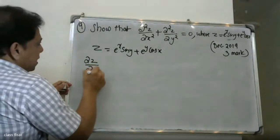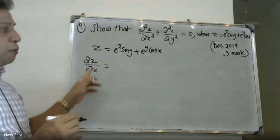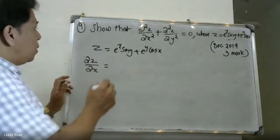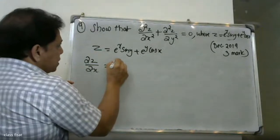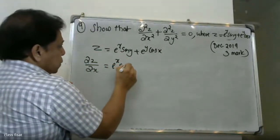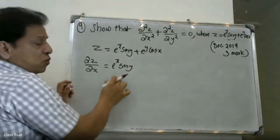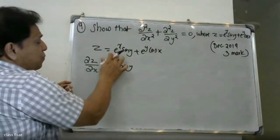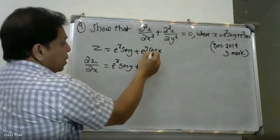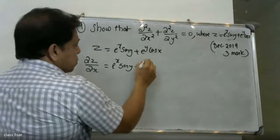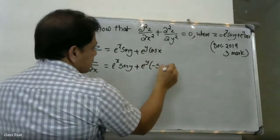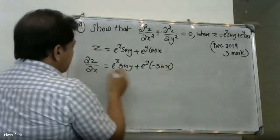Differentiating partially with respect to x: e raised to x we differentiate, e raised to x sin y — sin y is constant. And e raised to y is constant, cos x differentiate gives minus sin x. This is the first differentiation: dou z by dou x.